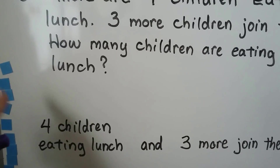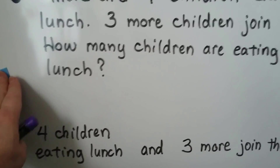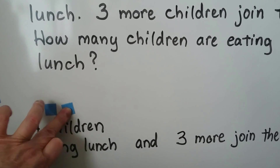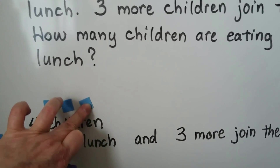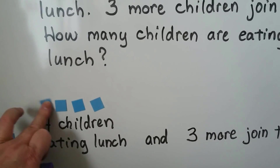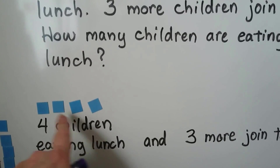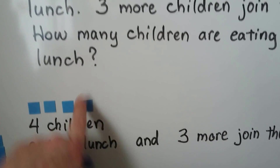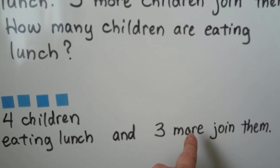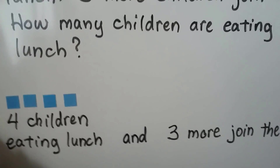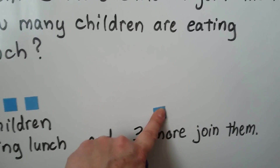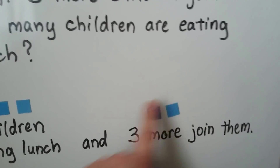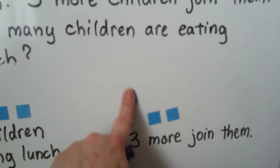We can use counters. We have four children — one, two, three, four — and each counter is one of the children. So we have four children, and we need three more to join them: one, two, three.